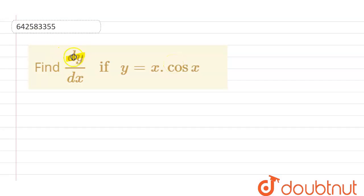We have to calculate the value of dy divided by dx if y equals x cos x. So now we can start with the given y. The value of y is equal to x into cos of x.